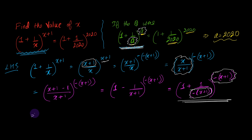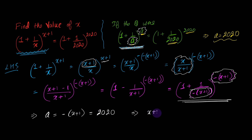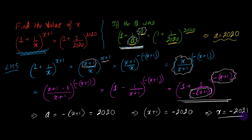Now, taking a = -(x+1), this quantity equals 2020. Thereby we get -(x+1) = 2020, so x+1 = -2020, and hence x = -2021. That is the answer to this question. I hope you have understood everything taught in this video. Thank you.